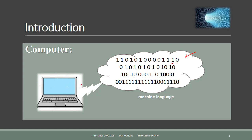Computer software translates between binary information and the information we actually work with on a computer, such as decimal numbers, text, photos, videos, or sound. Binary information is sometimes also referred to as machine language, since it represents the most fundamental level of information stored in a computer system.